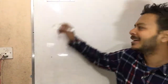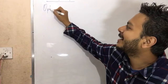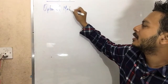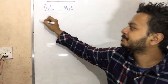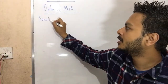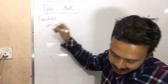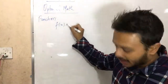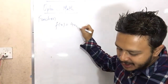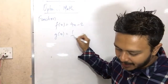Today I am going to ask a question of optional maths on functions. Copy down the question. Our question is: f(x) = 4x - 2 and g(x) = 1/x.